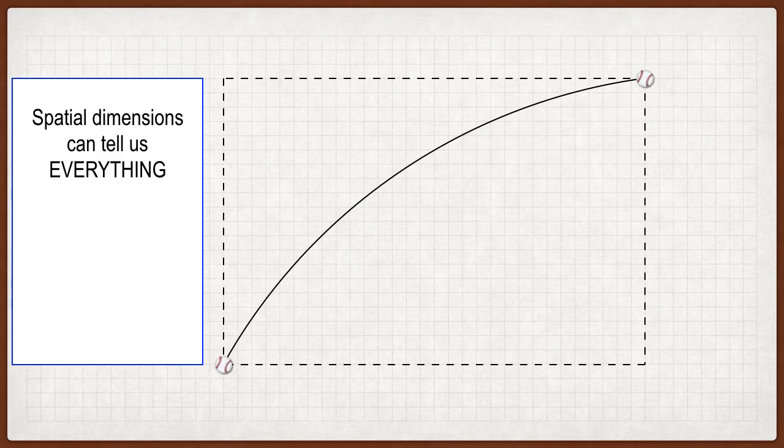We're working with the first half. The second half is symmetric — it's just curving downward on the way down. Same speeds, but the velocities are all downward because it's falling down, and it's moving to the right.